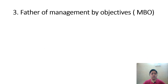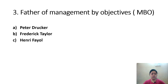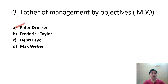The father of Management by Objectives: Option A, Peter Drucker; Option B, Frederick Taylor; Option C, Henry Fayol; Option D, Max Weber. The correct answer is Option A, Peter Drucker. In 1954, Peter Drucker introduced Management by Objectives (MBO), where one employee works collaboratively with a manager.